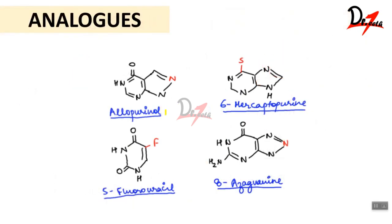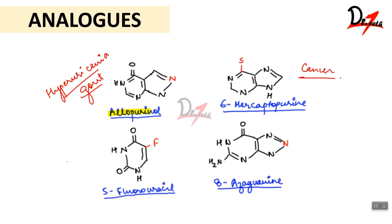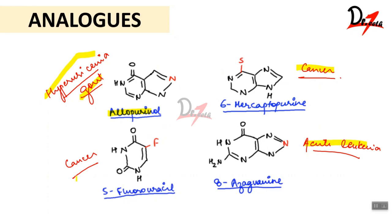Now let's look at some important analogues. Allopurinol is used for treating hyperuricemia and gout. 6-mercaptopurine is used to treat cancer. 5-fluorouracil is also used to treat cancer. 8-azaguanine is used to treat acute leukemia. These are the important analogues to remember: allopurinol for hyperuricemia and gout, 6-mercaptopurine for cancer, 8-azaguanine for acute leukemia, and 5-fluorouracil for cancer.